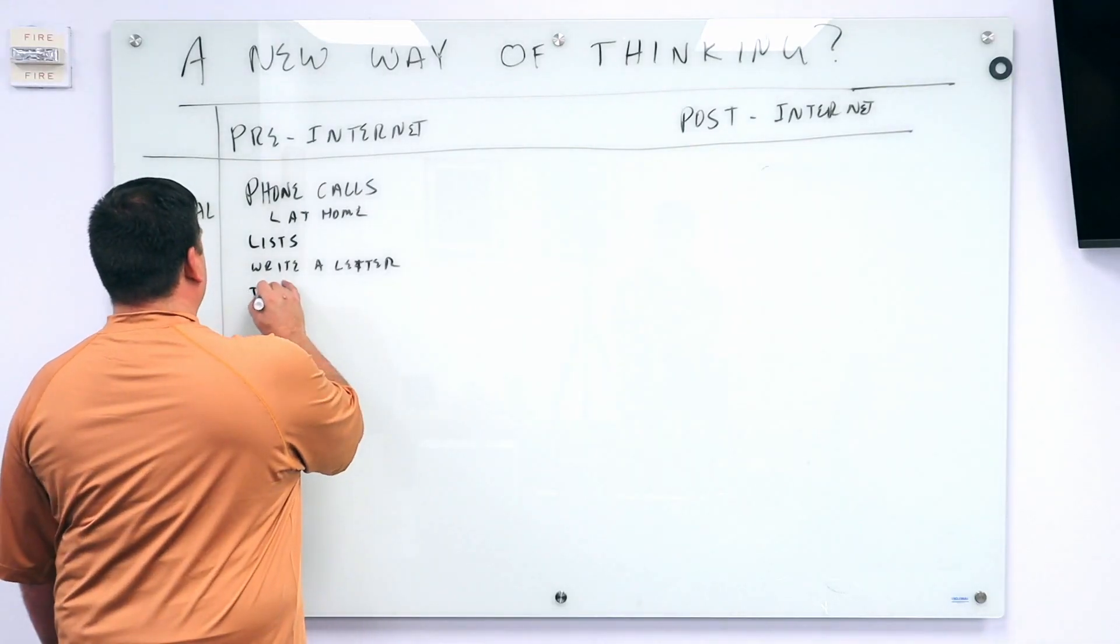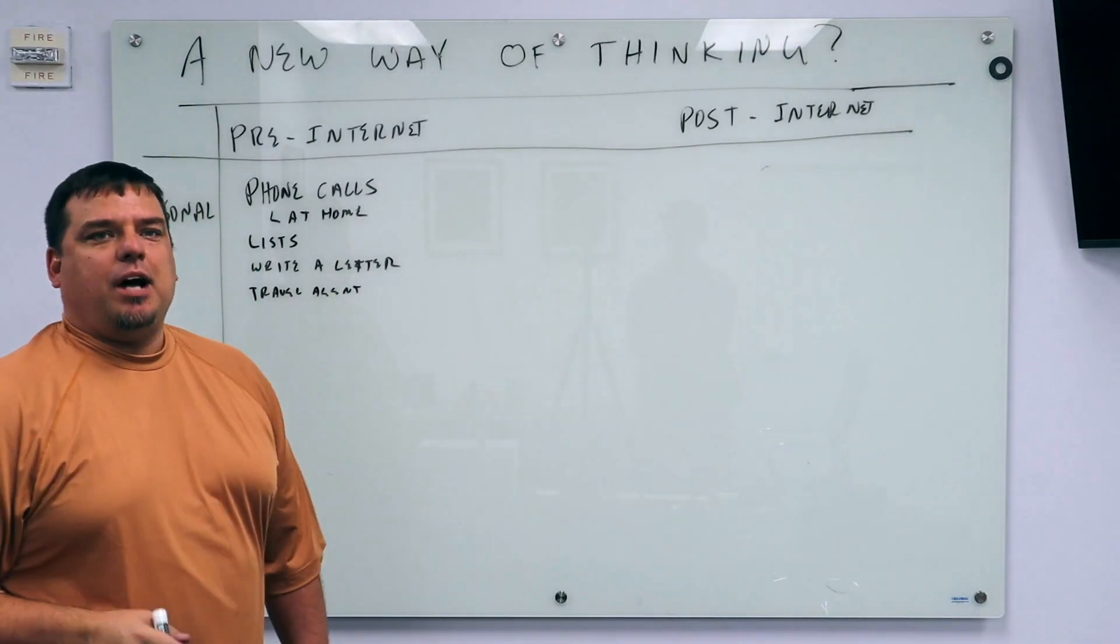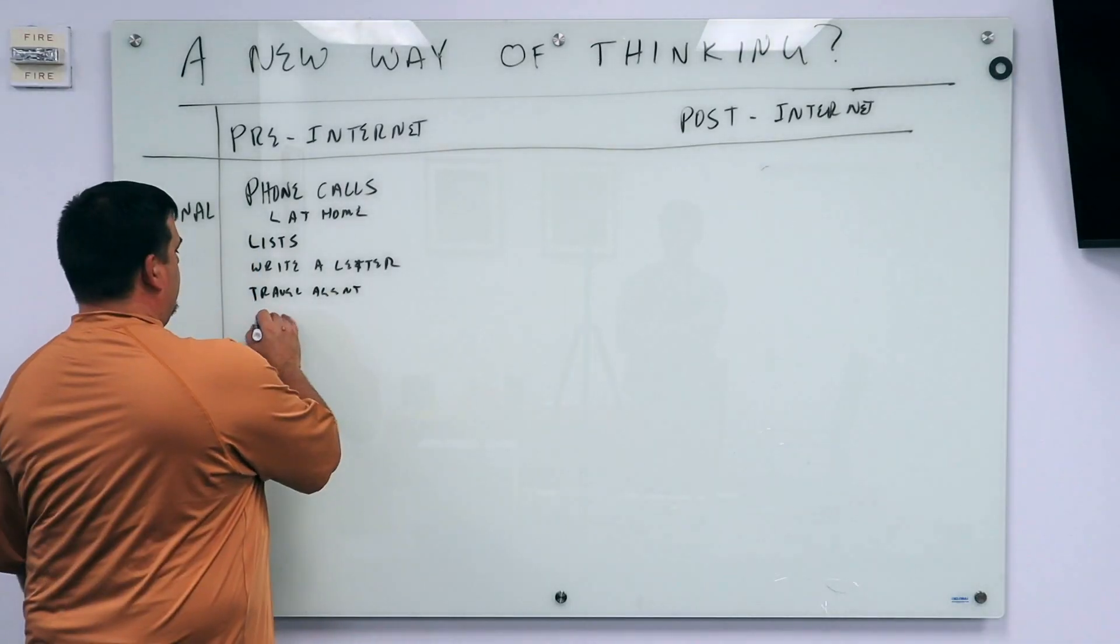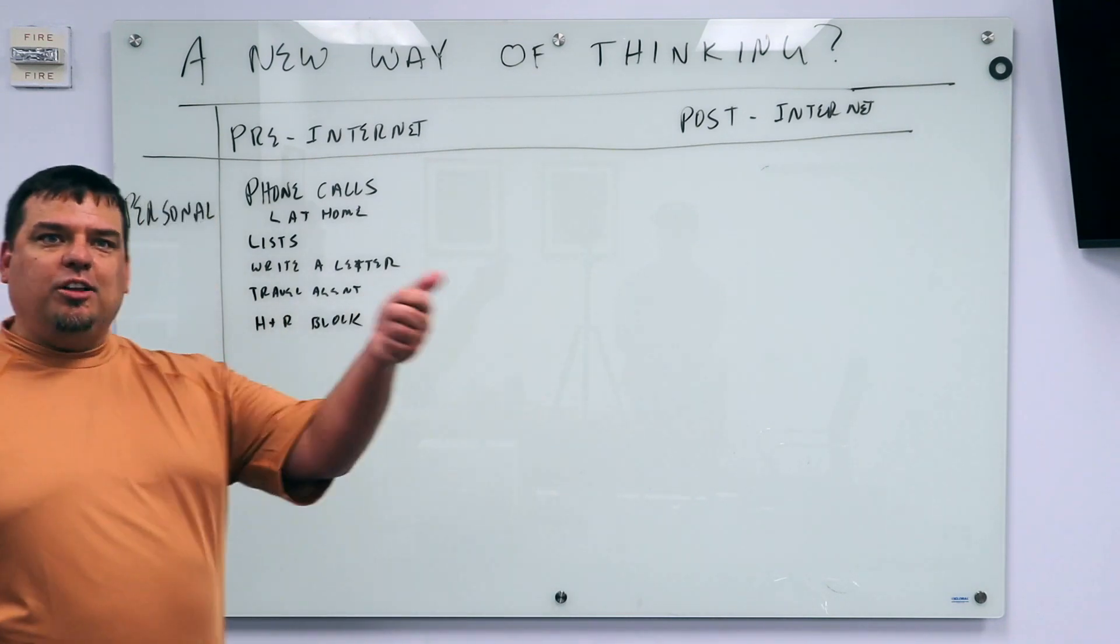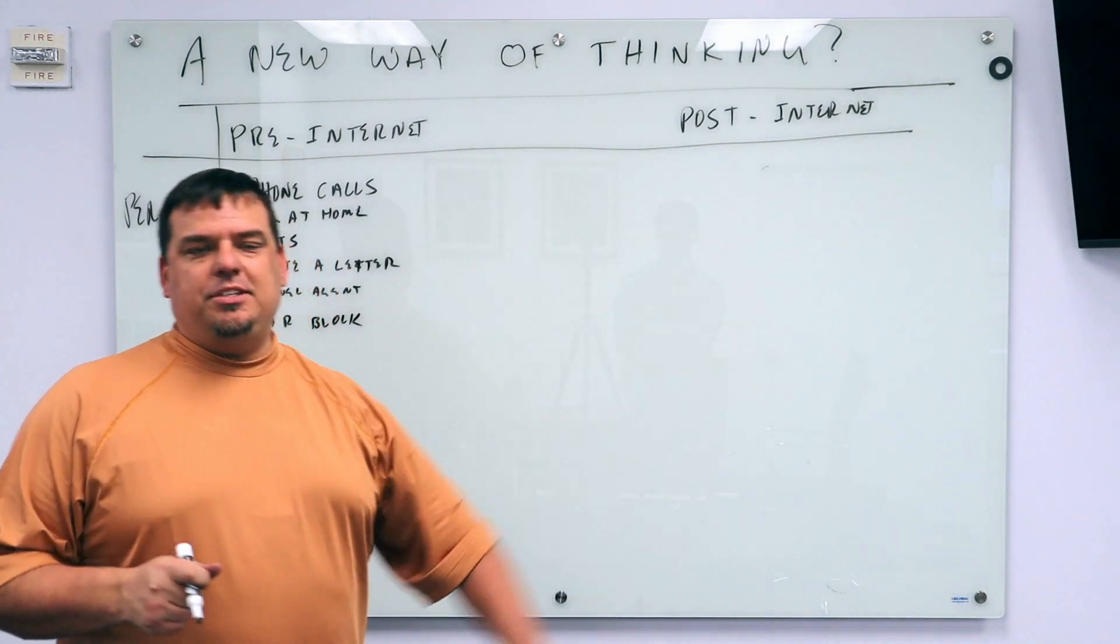You went to a travel agent, you got in your car, you drove to the travel agent and you spent a few hours there. How did you do your taxes? You went to H&R Block. You took all of your W-2s and you went to H&R Block.